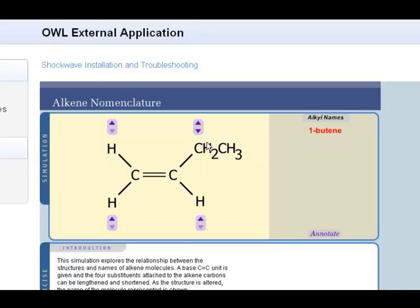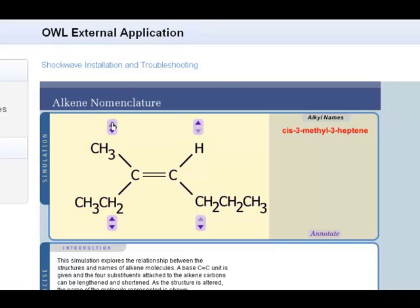So I'll remove this and try something new. There's a cis-2-hexene. Add another carbon, we'll have a cis-3-heptene. And I'll add a carbon up here. Notice it's still cis-3-heptene, but now we have a methyl group on number 3. So things get a little complicated.